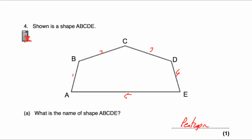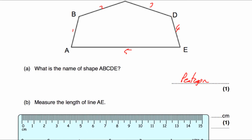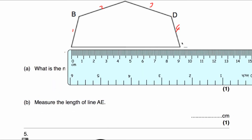Question 4B says: measure the length of line AE. Here we've got line AE — I'll remove the label '5' so it's not confused with five centimetres. Now, depending on the size of your printing it may change your answer. I've printed this on an A4 page and measured it as nine centimetres. Putting the ruler against line AE, it starts at zero and goes to nine centimetres. So my answer is nine centimetres, though that may change depending on how big the pentagon is when you've printed it.